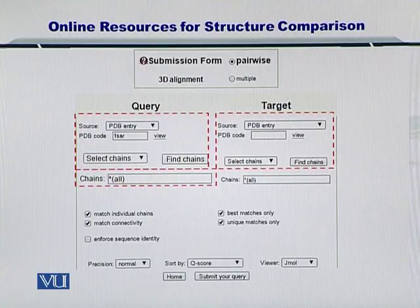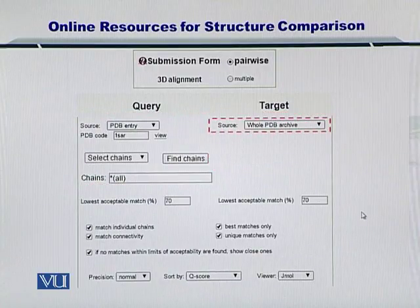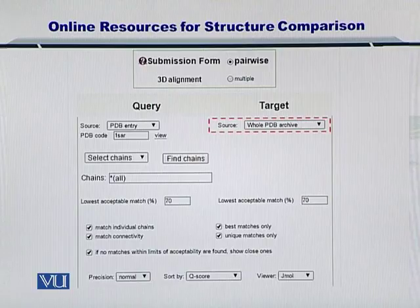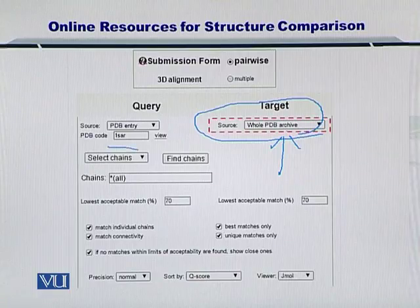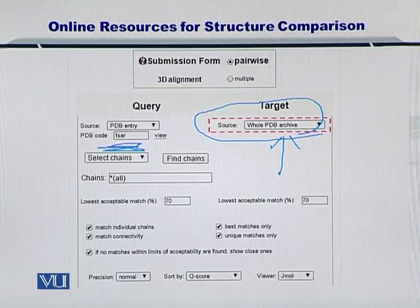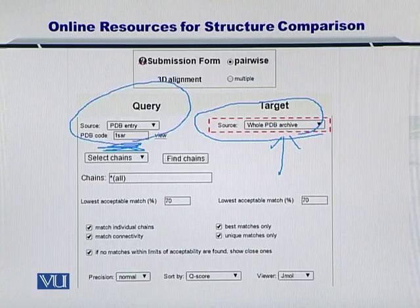But what if you want to compare a protein with the entire PDB database? So you want to see which other proteins are similar to the protein of your interest in the entire PDB database. For that, the software provides you with setting the source for the target as the whole PDB archive. If you select the whole PDB archive, then the protein that you have specified will be compared with thousands of different proteins that are there in the PDB.